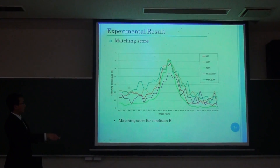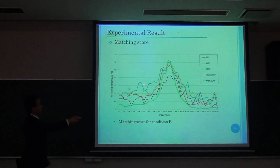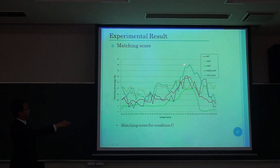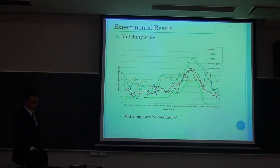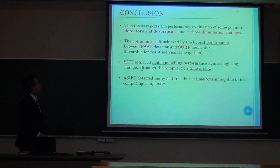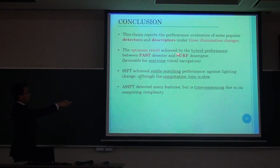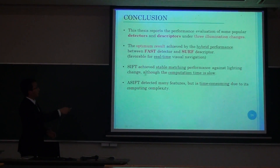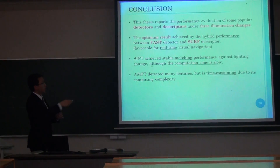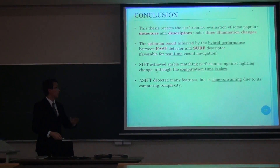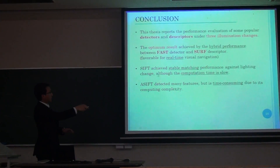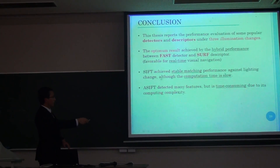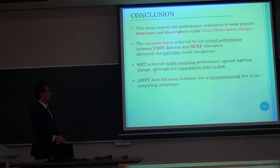The matching score developed by each algorithm shows that FAST outperforms others, as well as in condition C. The final conclusion is that the optimum result is achieved by the hybrid performance between FAST detector and SURF descriptor, which is the best combination and may serve as a model for real-time visual navigation. More detailed analysis is still needed. SIFT achieves stable matching but its computation time is slow, and A-KAZE detects many features but is time-consuming.